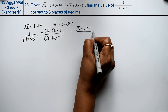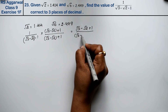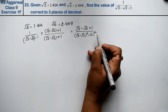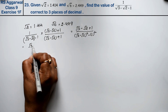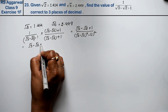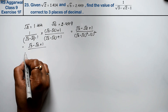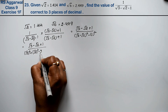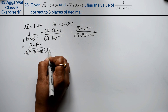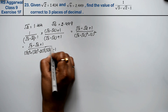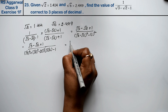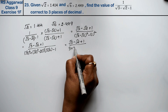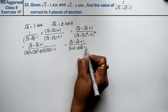Plus 1 upon root 3 minus root 2, whole square minus 1 square — using the identity a squared minus b squared. So we get root 3 minus root 2 plus 1 upon root 3 squared plus root 2 squared minus 2 into root 3 into root 2, minus root 2 plus 1, which gives root 3 minus root 6 minus 1.